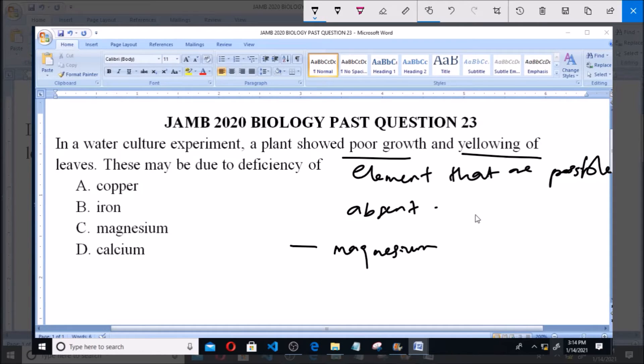Also, iron is another element that is required for the manufacturing of chlorophyll. When there's deficiency in iron, poor growth will be present because the plant will not be able to produce food